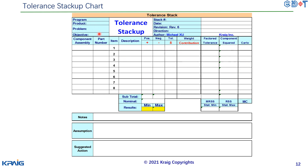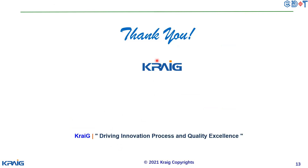The form also has objectives, a stack number, date, revision, and a direction field for x or y or any direction you define. There are notes and assumptions — it's very important to make assumptions, as a lot of tolerance stack-up is based on them. There is also an actions section for when there are issues that need to be corrected. Thanks for watching. We will practice in the next module and see you next time.